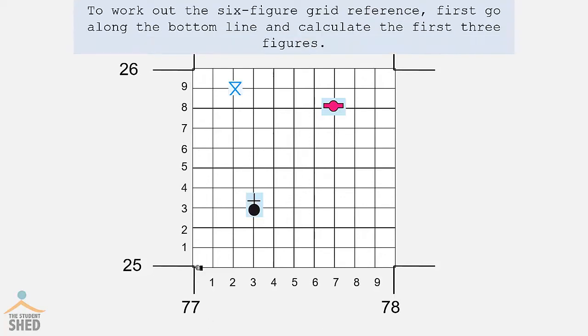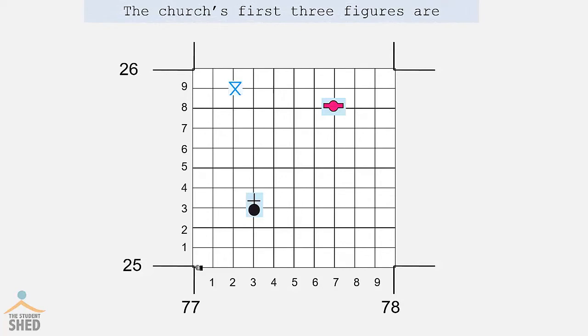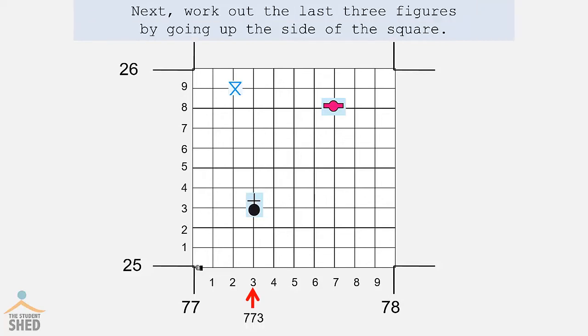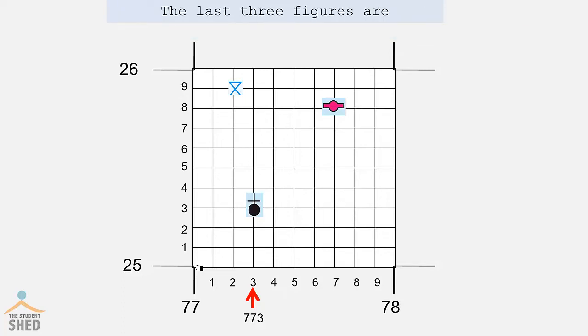So to work out the six-figure grid reference first, go along the bottom line and calculate the first three figures. The first three figures for the church is 773. Next, work out the last three figures by going up the side of the square. When we do that, the last three figures are 253. So the six-figure grid reference for the church is 773253.